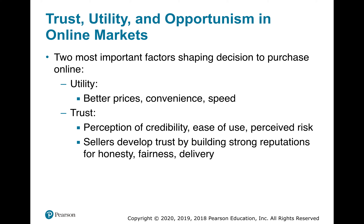Trust, utility, and opportunism in online markets — the two most important factors shaping decisions to purchase online. Utility means better prices, convenience, and speed. You can find the best price for an item, shop from your own home — especially convenient in wintertime — and Amazon Prime gets you two-day shipping. Trust involves perception of credibility, ease of use, and perceived risk. Sellers develop trust by building strong reputations for honesty, fairness, and delivery. A big website like Amazon or Walmart definitely has credibility and ease of use.